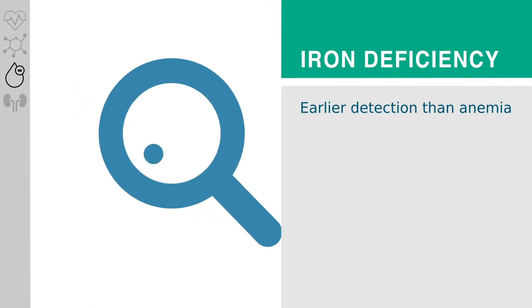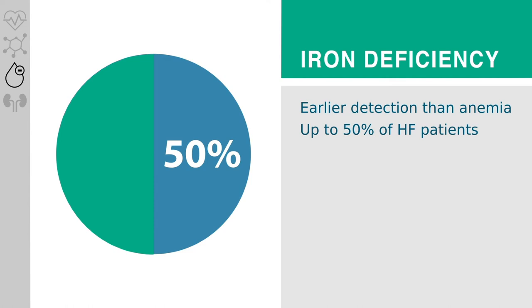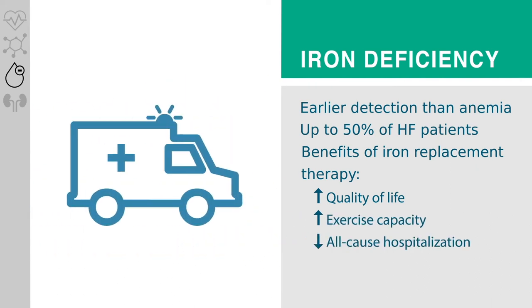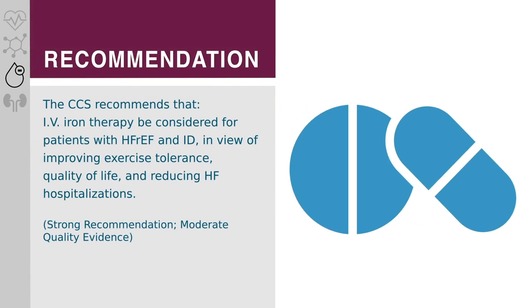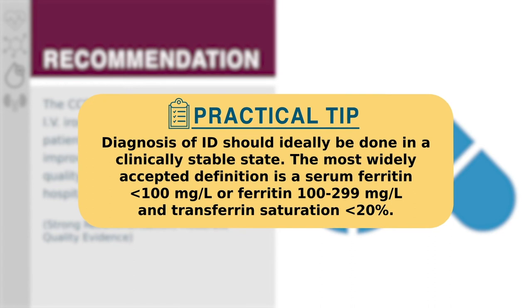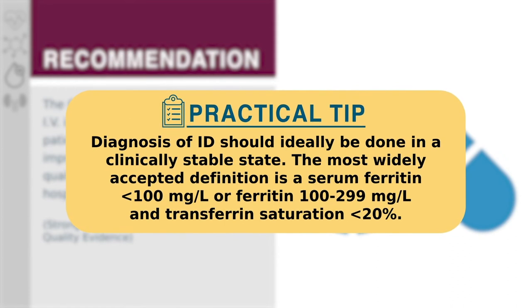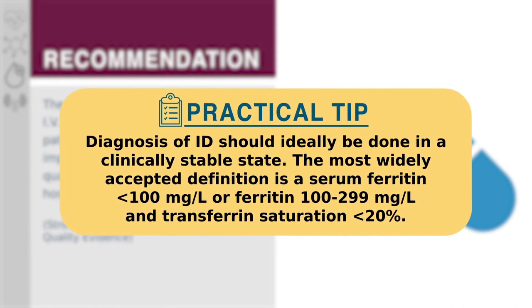Iron deficiency has been reported at a prevalence of 50 percent in patients with chronic heart failure, though this might be an underestimation. A meta-analysis suggests that iron replacement therapy can improve quality of life, six-minute walk distance, and all-cause hospitalization. The CCS recommends that IV iron therapy be considered for patients with heart failure with reduced ejection fraction and iron deficiency in view of improving exercise tolerance, quality of life, and reducing hospitalization. Because of the rapid rate of iron repletion using the IV route, its favorable tolerability profile, and the available evidence, this treatment should be considered rather than oral iron repletion.